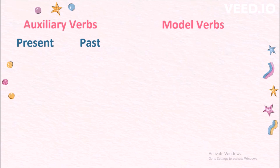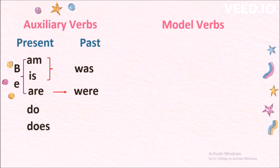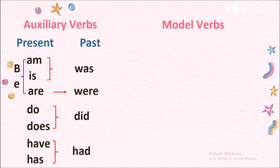When it comes to auxiliary verbs, we have three present forms of be: am, is, and are. There are two present forms of do: do and does, and there is only one past form for both, which is did. And there are two present forms of have: have and has.